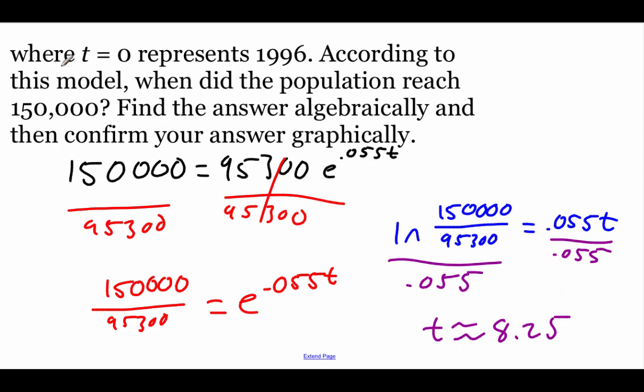So if we're trying to figure out what year we reached 150,000, well it says earlier that a t value of 0 means we're talking about 1996. Well, this is 8 and a quarter years later. So if we add 8 years to 1996, we reached a population of 150,000 in the year 2004.